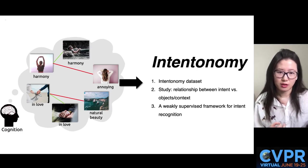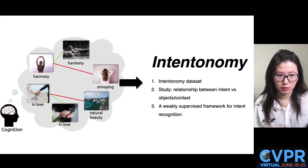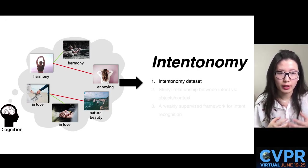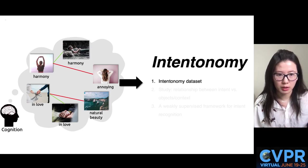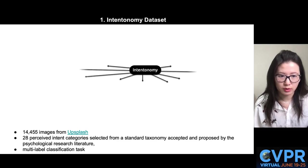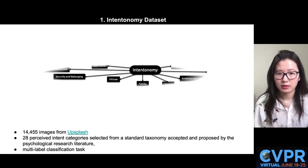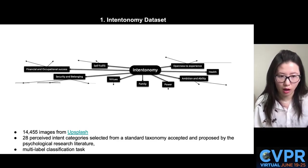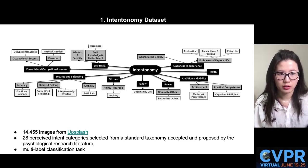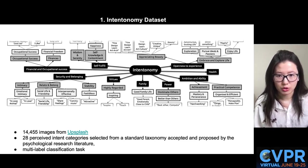In this talk, I'll cover the following three components of this work. I'll first introduce a novel image recognition dataset, which we call Intentonomy. Our proposed dataset contains around 14,000 images. This slide illustrates our resulting ontology in full, with hierarchy information and annotated image examples.